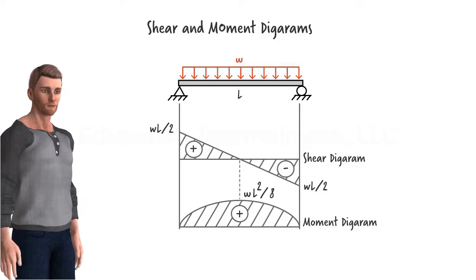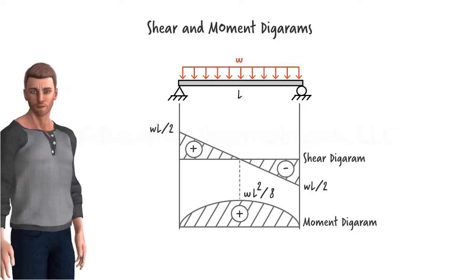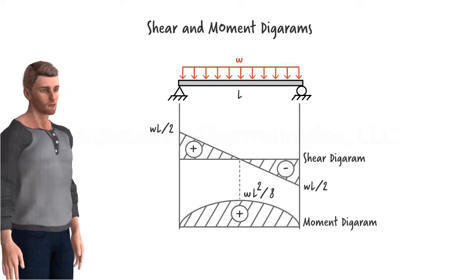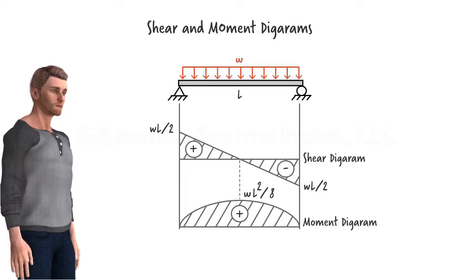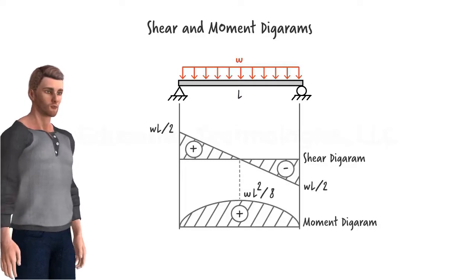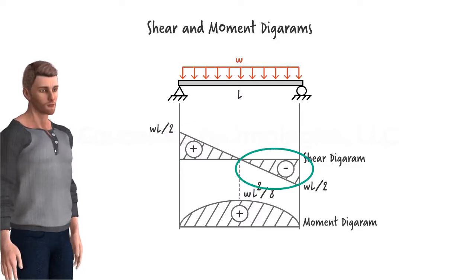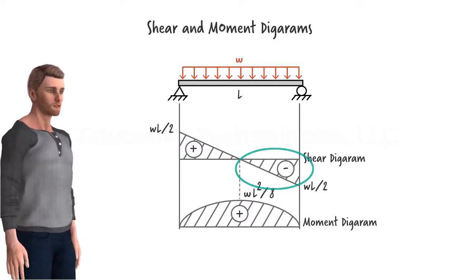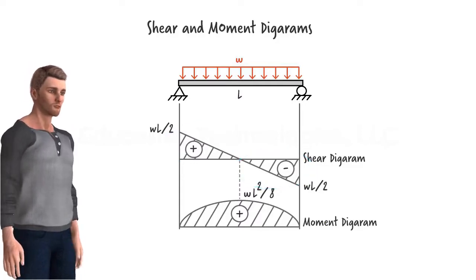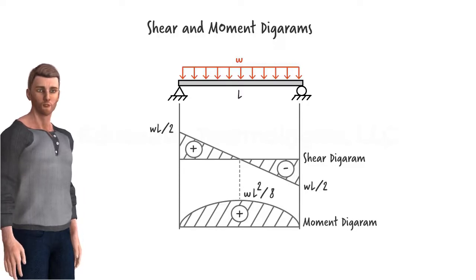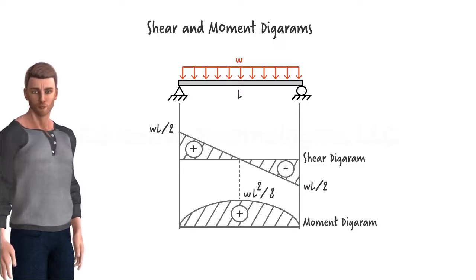Before we start explaining how shear and moment diagrams can be drawn, let's establish a sign convention. In this example, note that the left region of the shear diagram is labeled positive and the diagram's right region is labeled negative. What exactly does positive or negative shear mean? That is what the sign convention is for.